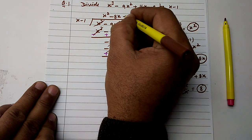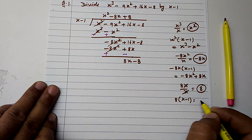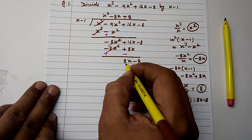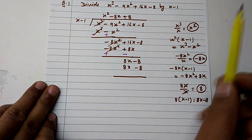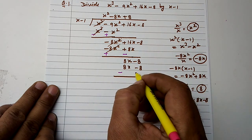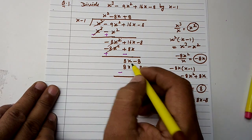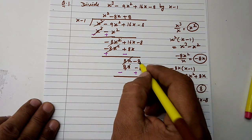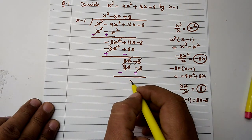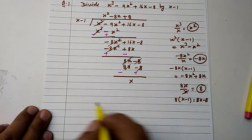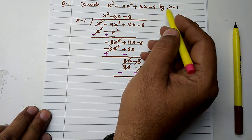Now 8 multiplied by x minus 1 gives 8x minus 8. We have 8x minus 8. After sign change — negative becomes positive — 8x and 8x cancel, and 8 minus 8 also cancels. So we have seen x cube minus 9x square plus 16x minus 8.